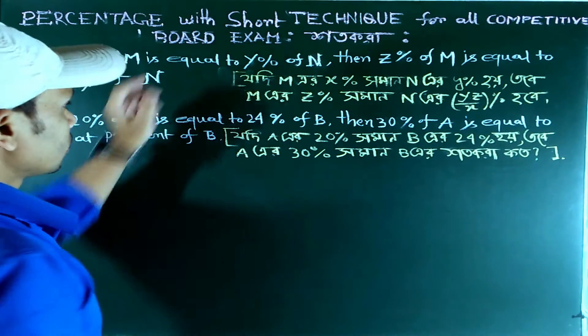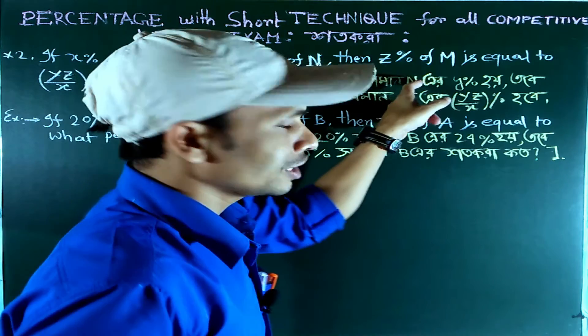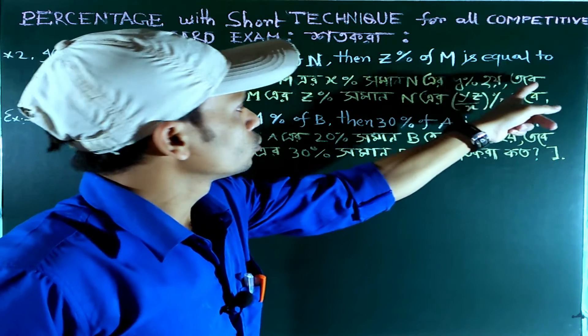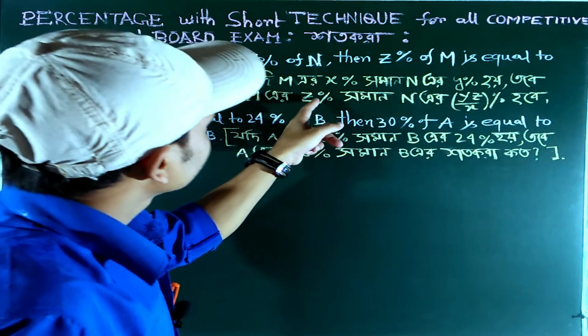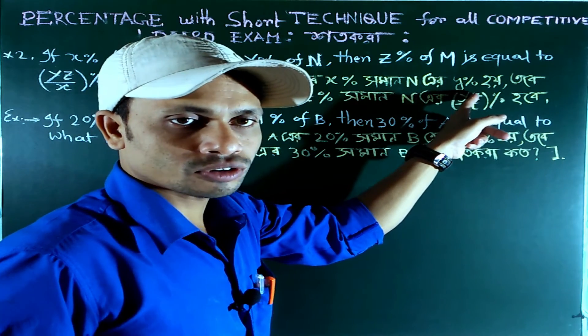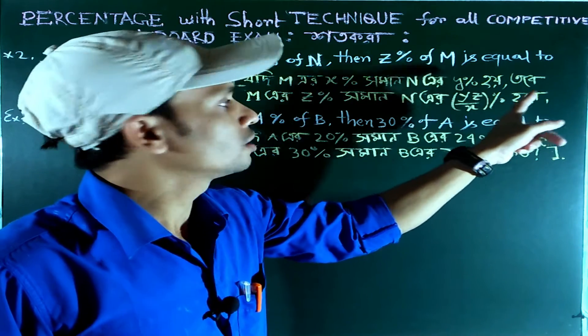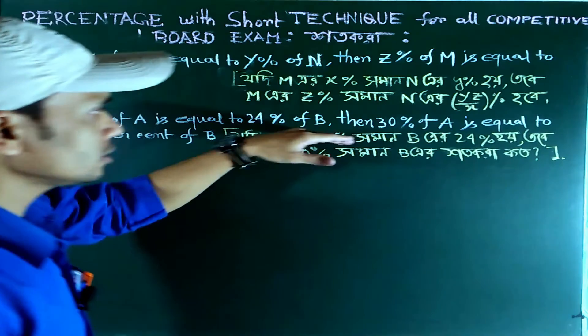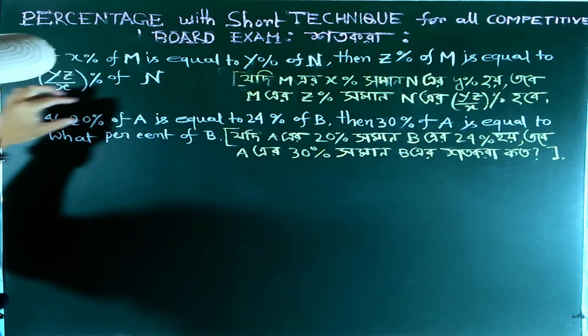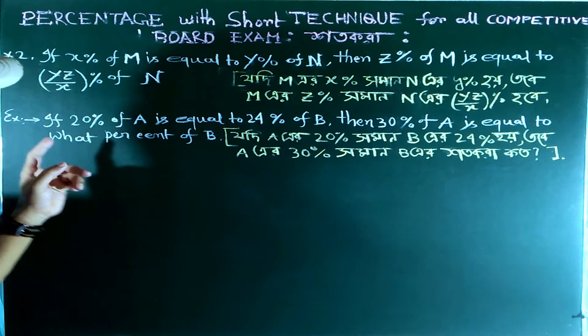Let me explain this. If M's X percent equals N's Y percent, then M's Z percent will be YZ upon X percent of N. Let's look at an example to understand how to solve this.